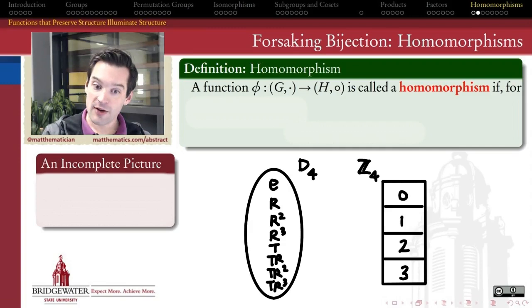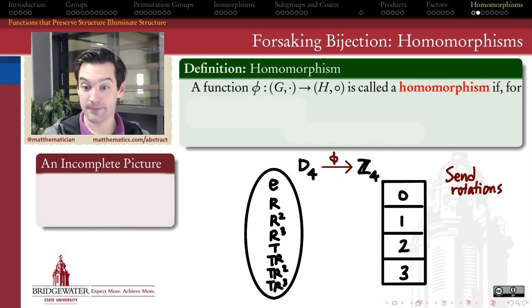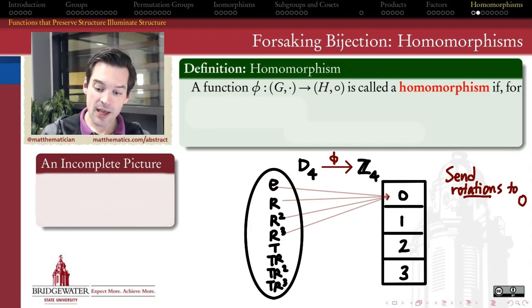Is there a way to create a function from D4 to Z4 that's capable of telling me something about D4? And if so, what would that function look like? Here's an example of what I might do. If I wanted my function to illuminate the difference in the dihedral group between those elements which describe rotations of the square and those elements which describe reflections of the square, could I use a function to do that?